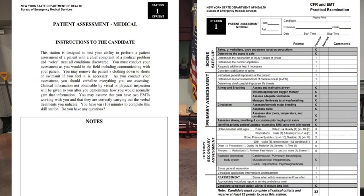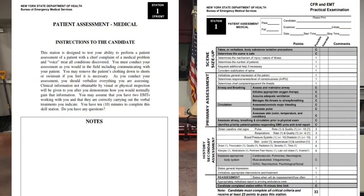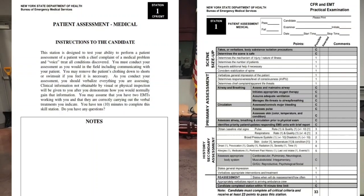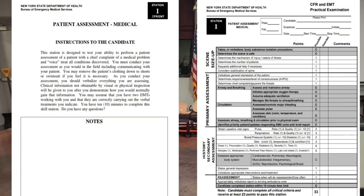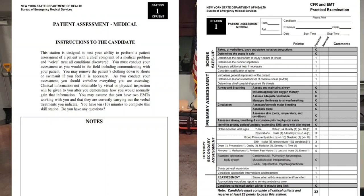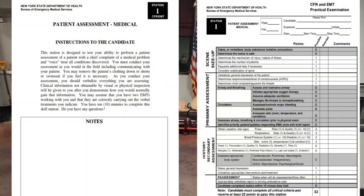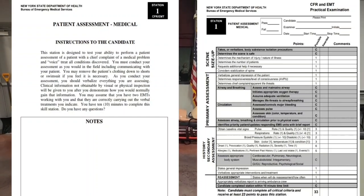This station is designed to test your ability to perform a patient assessment of a patient with a chief complaint of a medical problem and voice treat all conditions discovered. You must conduct your assessment as you would in the field, including communicating with your patient. You may remove the patient's clothing down to shorts or swimsuit if necessary. As you conduct your assessment, you should verbalize everything you are assessing. Clinical information not obtainable by visual or physical inspection will be given to you after you demonstrate how you would normally gain that information. You may assume that you have two EMTs working with you and that they are correctly carrying out the verbal treatments you indicate. You have 10 minutes to complete this skill station. Do you have any questions?